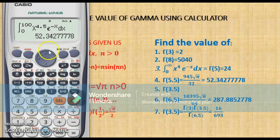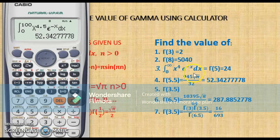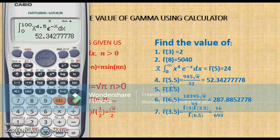Let's wait about a minute and our answer will appear. Our answer is 52.3427778, which is what is given to us. You can also verify this: 945 root pi over 32 gives the same value. That is our answer for gamma of 5.5.